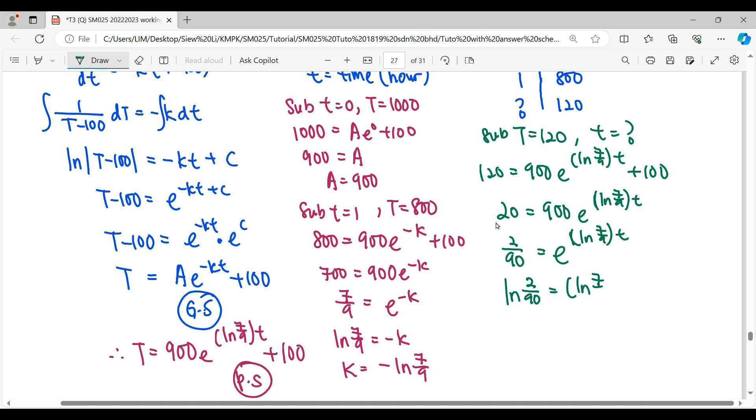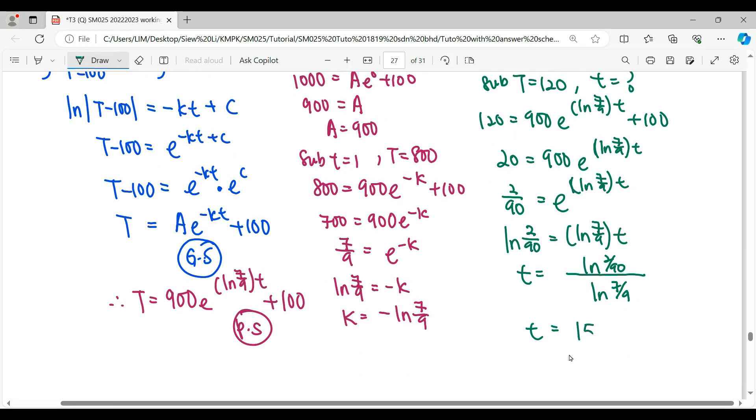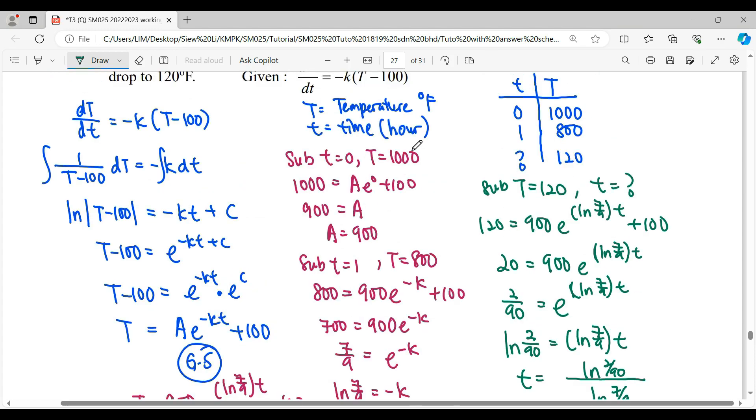Lastly, if you find t, it will be ln(2/90) divided by ln(7/9). This one you just press calculator. So t will be 15.15. The units here is hours.